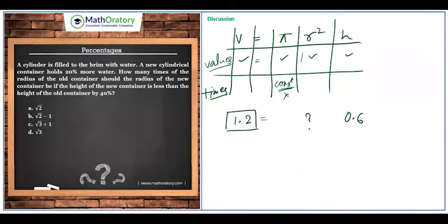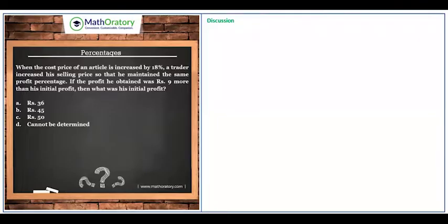We have the relationship: volume is 1.2 times, the unknown r² times, and 0.6 should equal 1.2. So r² equals 1.2 divided by 0.6, which you can figure out mentally. Before discussing the solution further, let's run through a very basic idea that is helpful in ratio and percentage questions.